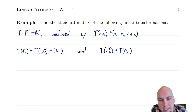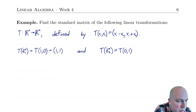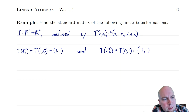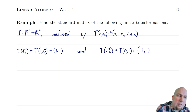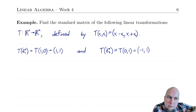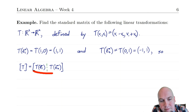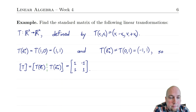Now we need T of E2. E2 is the vector (0, 1), so plugging in we get 0 minus 1, 0 plus 1 — so T of E2 equals (−1, 1). Now what do you do with those once you've got them? The theorem says you take these vectors and stick them as columns into a matrix. So the standard matrix equals T of E1 as the first column and T of E2 as the second column. The first column is (1, 1) and the second column is (−1, 1). That's the standard matrix.